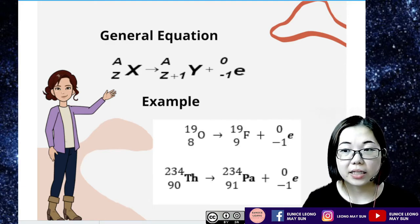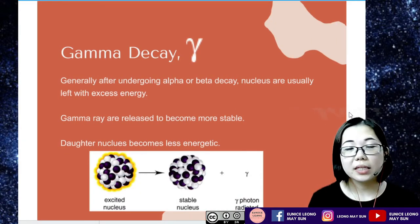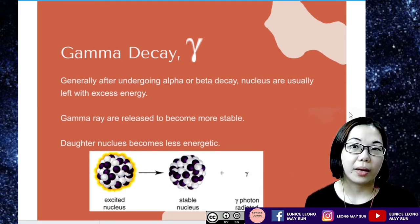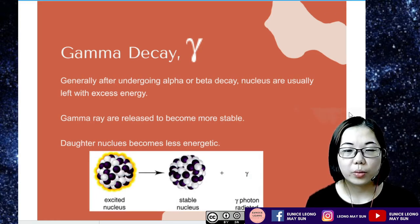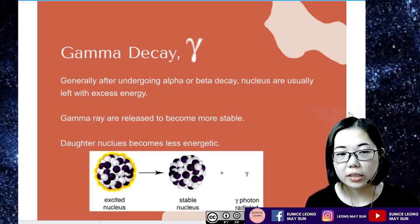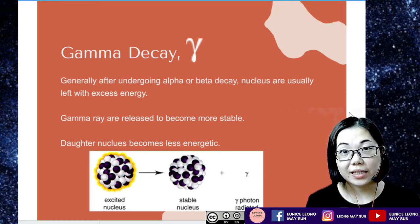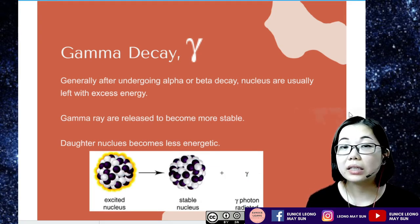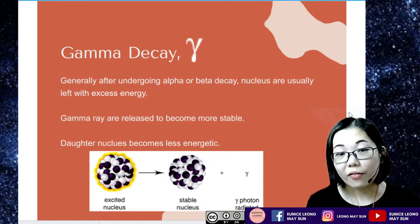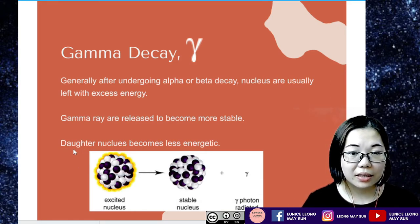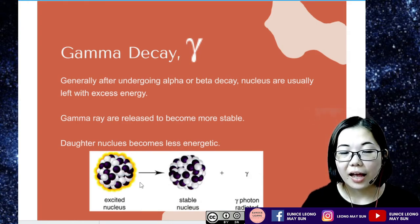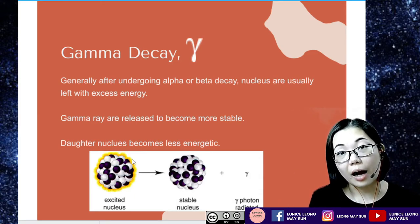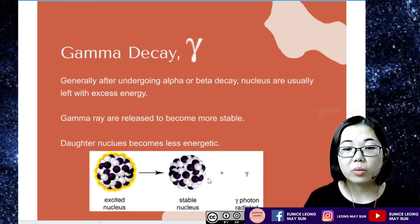So the example here is O-19-8 and it decays into F-19-9 plus an electron particle of zero negative one. So this is actually for beta decay. Let's go to gamma decay. Now gamma decay generally occurs because it actually happens after the nucleus undergoes alpha and beta decay. So the nucleus is usually left with excess energy internally in the nucleus. So in order to achieve stability, the nucleus actually has to release out energy and this energy releases out as gamma rays. So after releasing out gamma rays, the nucleus will become more stable.